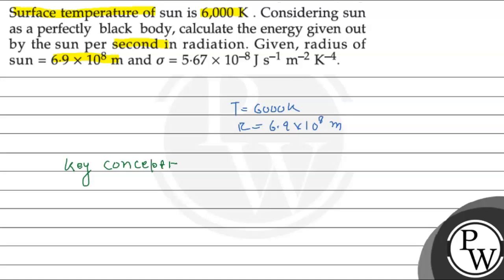The key concept is that the energy radiated per unit time is equal to sigma into A into T to the power 4.